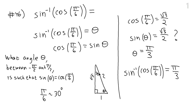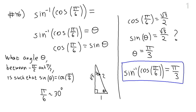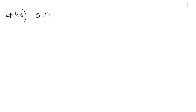Another way to view this: cosine of pi over 6 equals sine of theta — what must theta be? That theta must be pi over 3, confirming the final answer. For our next problem, number 48, we have another composition of a trig function and an inverse trig function. This time we need to evaluate sine of inverse secant of 5 thirds.